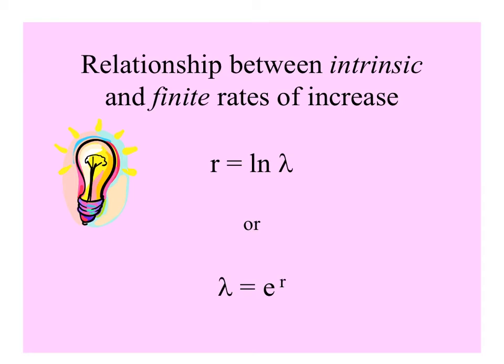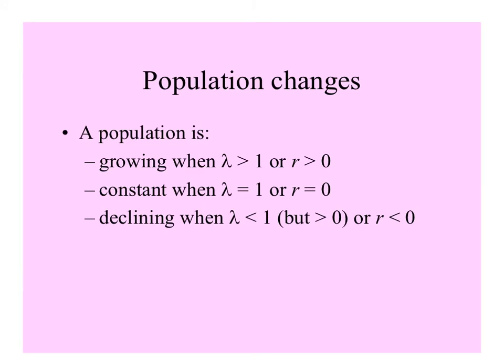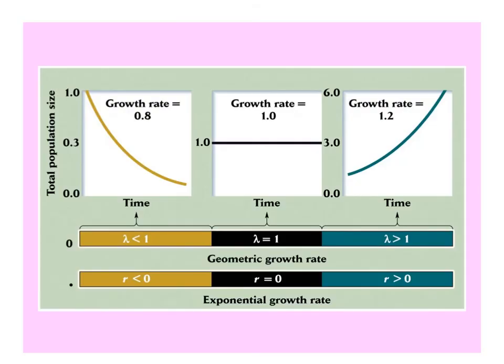Populations grow when lambda is greater than 1 or little r is greater than 0; they remain constant when lambda equals 1 or little r equals 0; and they decline when lambda is less than 1 but greater than 0, or little r is less than 0. This is shown in a graphic with bars showing the different values of growth rates — geometric or exponential — that give decreasing, constant, or increasing population size.